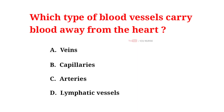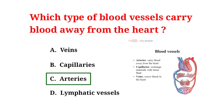Which type of blood vessels carry blood away from the heart? A. Veins. B. Capillaries. C. Arteries. D. Lymphatic vessels. And the correct answer is C. Arteries. Arteries are the blood vessels that carry blood away from the heart.